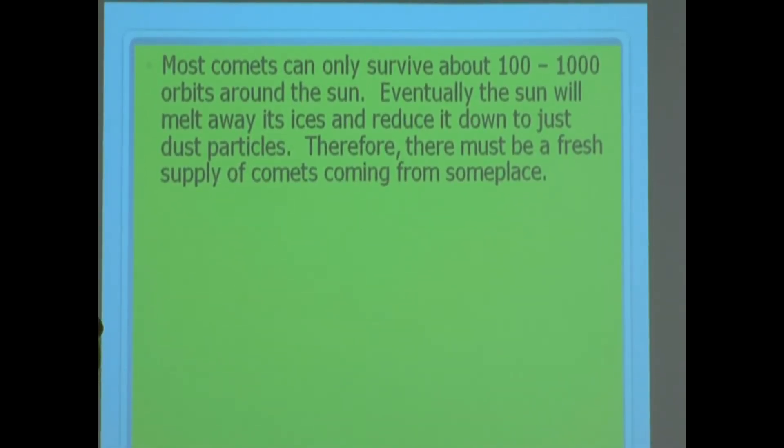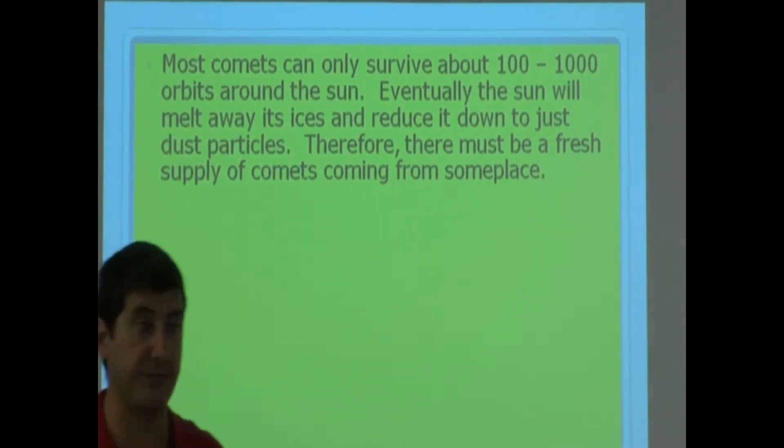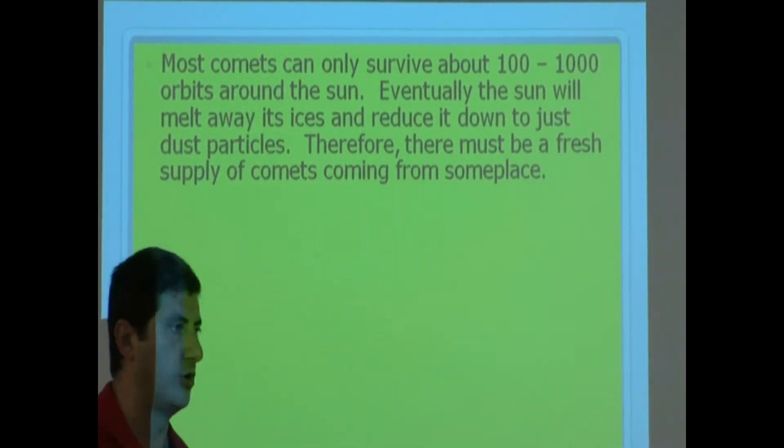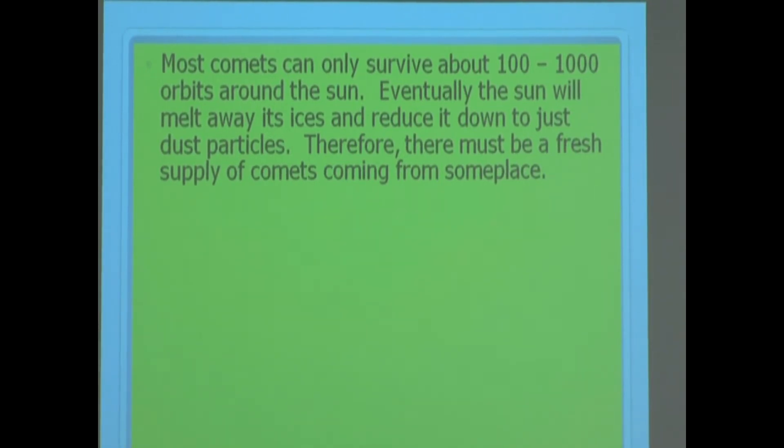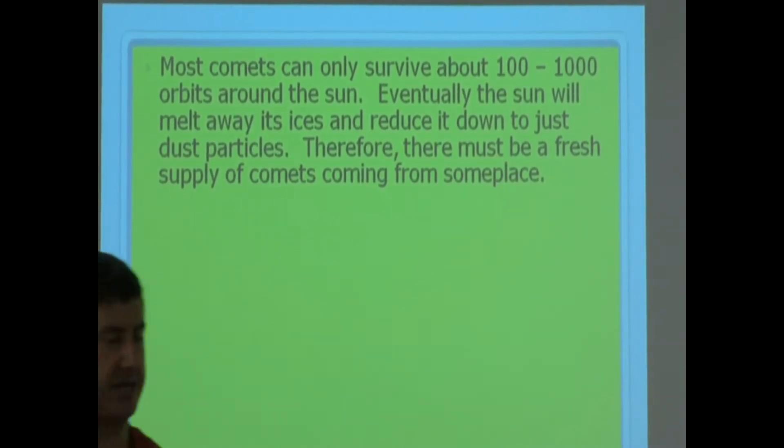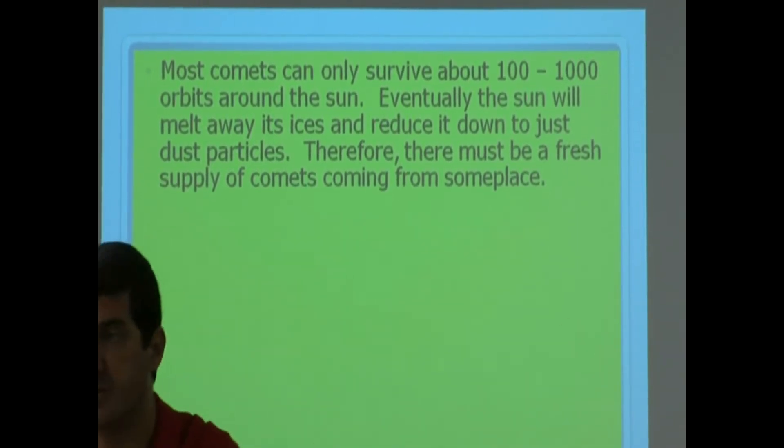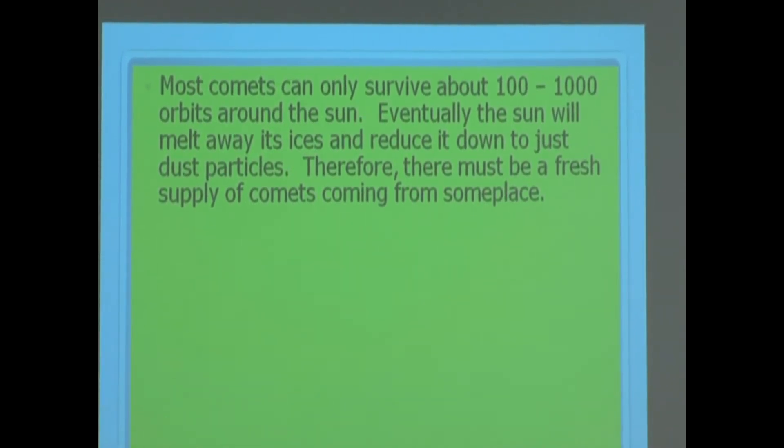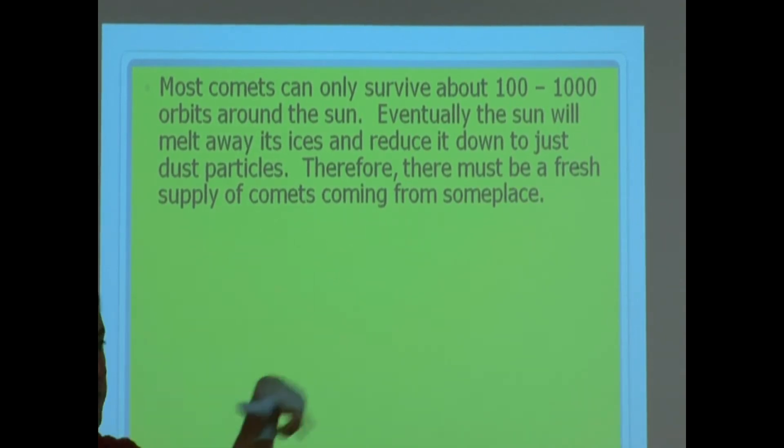Most comets can only survive about 100 to 1,000 orbits around the sun. That means they're not going to go around forever. There's going to come a time limit. They're going to either burn out, or they're going to just go away from the solar system. Eventually, the sun will melt away its ices and reduce it down to just dust particles, because all this heating is happening constantly. Therefore, there must be a fresh supply of comets coming from someplace. So since they have a particular lifetime, they're not going to last forever. The fact that we continually have new, fresh supply of comets coming makes us think, where is this coming from?